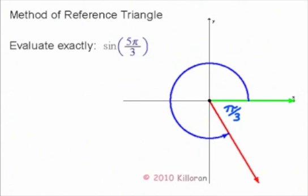And since we're going to be doing a reference triangle, I'm going to just choose any point on this terminal side and draw an altitude back to the x-axis. It always has to go towards the x-axis.